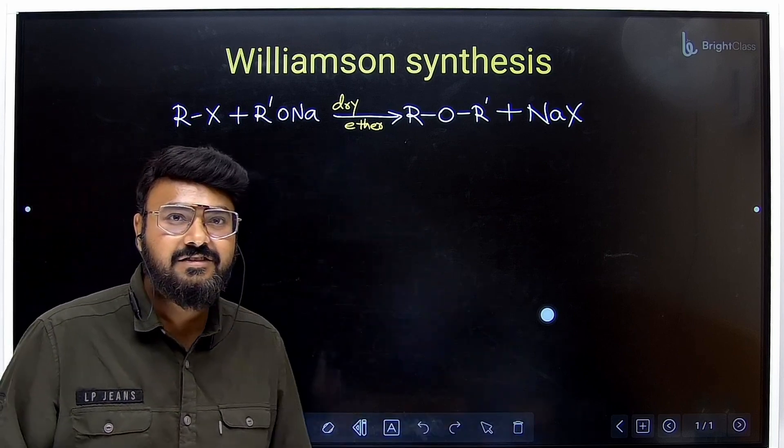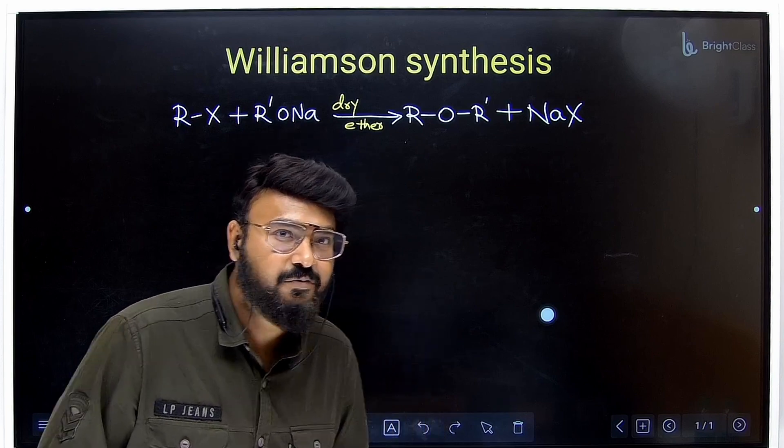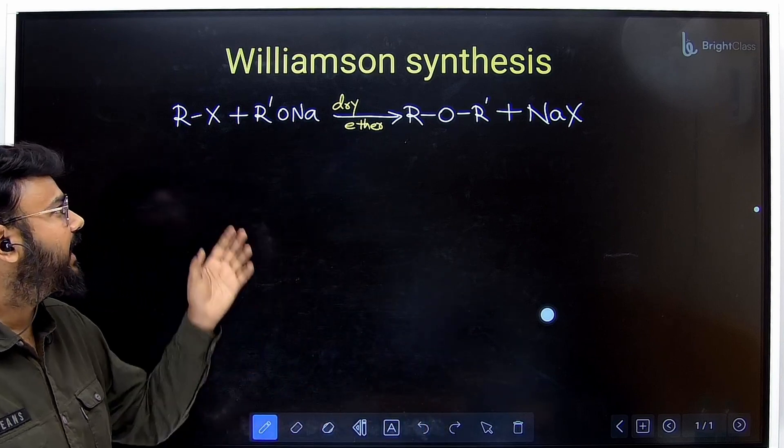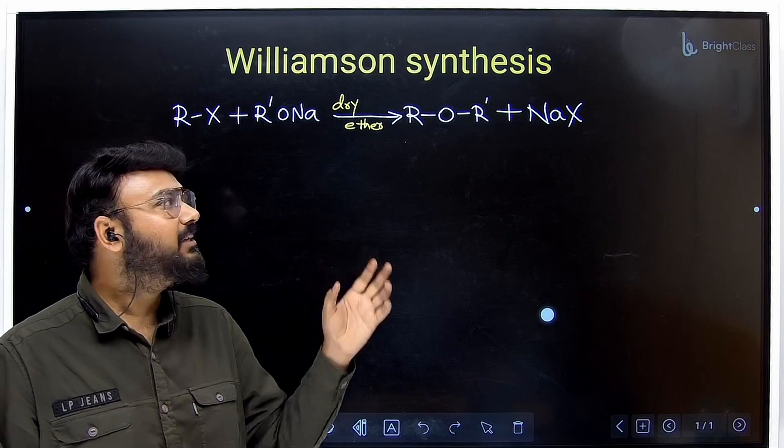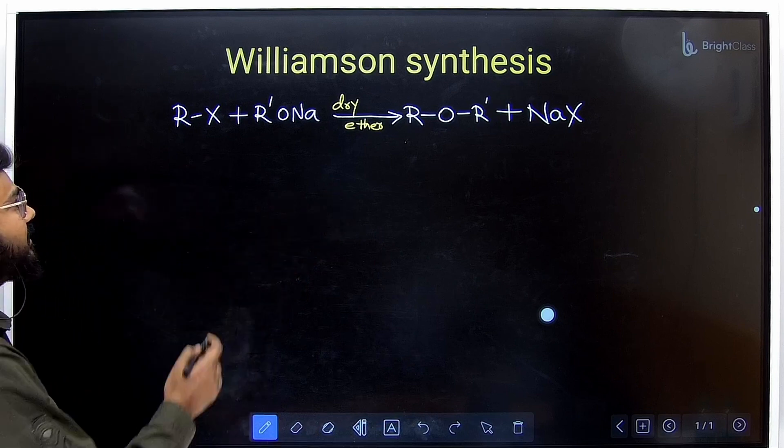Let's see, we have Williamson synthesis. We know in Williamson synthesis we form ethers. How do we form? We take the alkoxide, sodium alkoxide, along with alkyl halide in the presence of dry ether to form ether. So remember, this reaction mechanism we will discuss now.